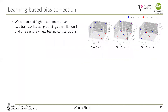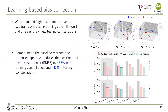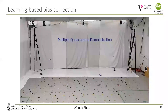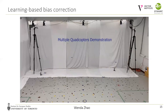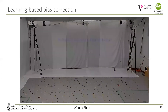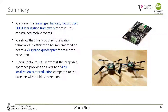To demonstrate generalizability, we conducted flight experiments over two trajectories using three entirely new testing constellations. Comparing to the baseline method, the proposed approach reduces the position root-mean-square error by around 42 percent in the testing constellations and achieved an accuracy of approximately 14-centimeter RMSE onboard a nano-quadrotor. We also showed that with TDOA measurements, we are able to fly multiple quadrotors simultaneously. The quadrotors still show relatively worse estimation results in the z-axis, which is attributed to our constellation setup — the separation of the anchors in the z-axis is only around 2.8 meters, limited by the height of the tripod. With a larger separation in z, we expect to see better performance.